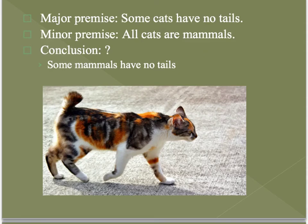One more: major premise: some cats have no tails. Minor premise: all cats are mammals. Conclusion: some mammals have no tails.